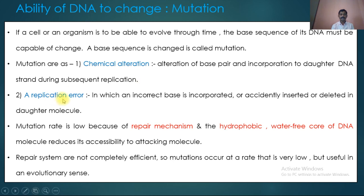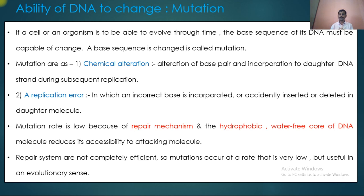Mutation rate is low because of the presence of repair mechanisms and the hydrophobic, water-free core of the DNA molecule, which reduces its accessibility to attacking molecules. However, replication errors can sometimes be harmful or sometimes beneficial — for example, for the conversion of a specific strain or for surviving in a hazardous environment. The repair systems are not completely efficient, so mutations occur at a very low rate, but this is useful in an evolutionary sense.